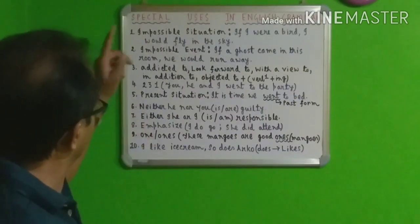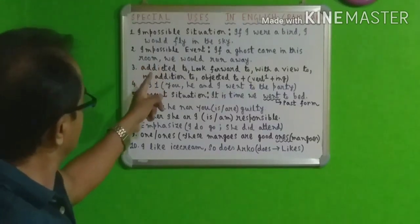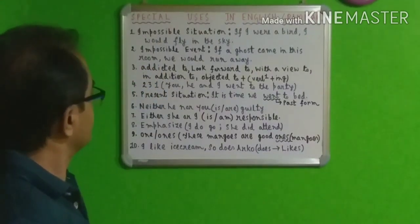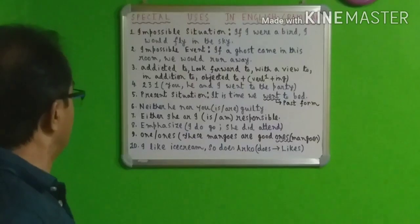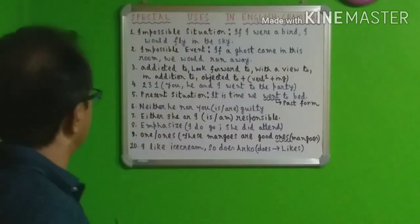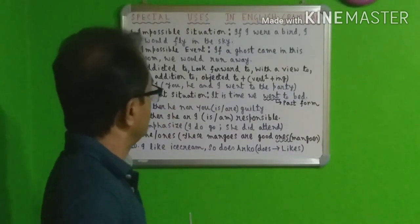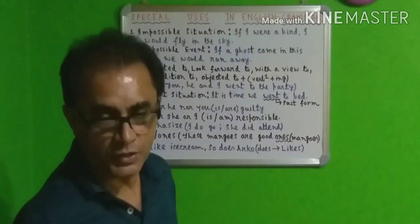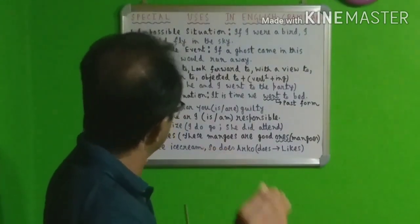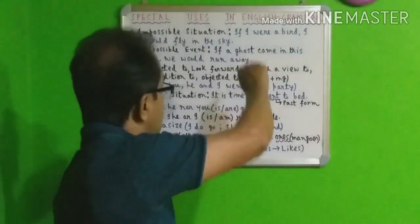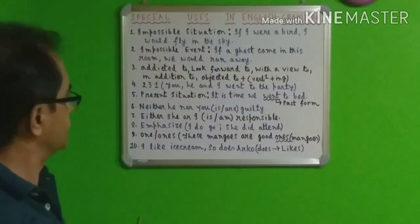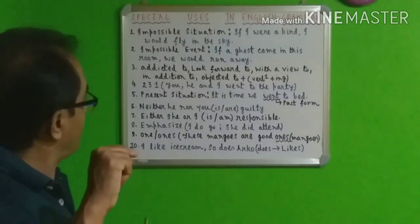The first one was impossible situation; the second one is impossible event. For example: 'If a ghost came into this room, we would run away.' That is also an impossible event because a ghost generally does not come into a room. This is a present impossible event, but we have used past tense here — 'came' is the past tense. You have to remember that.